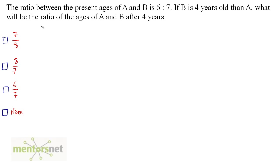Let us move on to the second question. The ratio between the present ages of A and B is 6 by 7. If B is 4 years older than A, what will be the ratio of ages of A and B after 4 years? The ratio between the present ages of A and B is 6 is to 7, so we can write A by B is equal to 6 by 7.